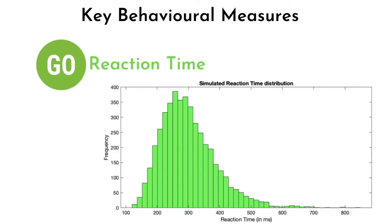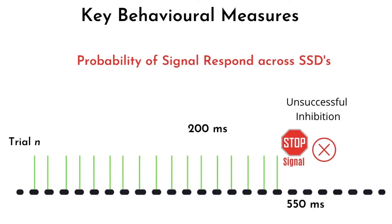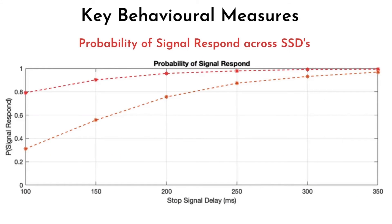The next key behavioral measure is the Probability of Signal Respond across the Stop Signal Delays. This essentially accounts for the probability that a participant will respond despite the presentation of the stop signal. Theoretically, as the Stop Signal Delay increases, the probability of an unsuccessful inhibition will increase as well, as seen in the simulated data. We can also observe that two participants can have different probabilities of signal respond for the same SSD — these differences are interesting to researchers who study response inhibition.